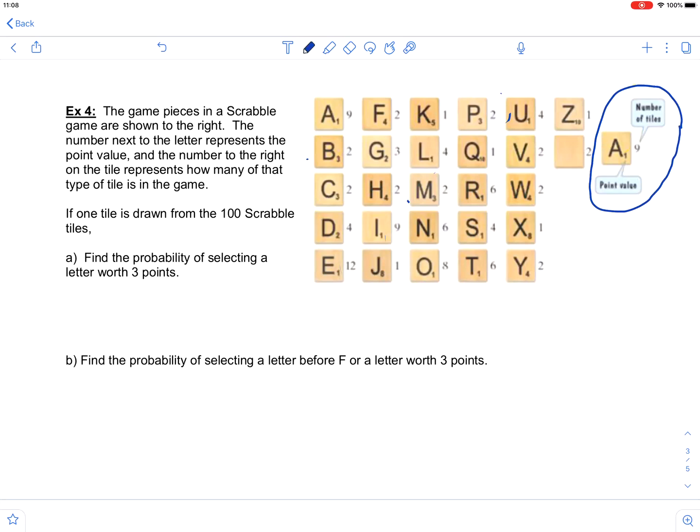So for example, for the letter A, the small one next to the A tells you that an A is worth one point. The nine to the right of the tile is telling you that there are nine tiles with the letter A on them in a Scrabble game. So you can see that information is given for all the different letters, the point value, as well as how many of that tile is included in the game. So that's the background information that you need to be able to answer these questions.